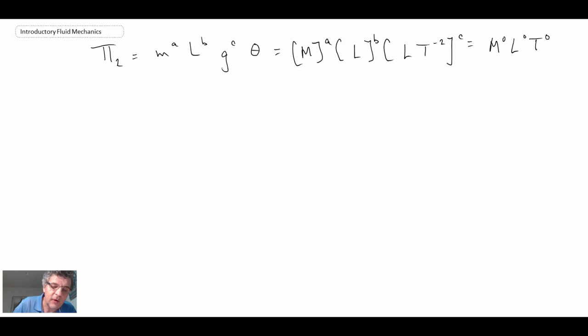Okay, so again let's go through our process. Beginning with the mass, we have A and that is equal to 0. Then looking at length, on the left hand side for length we have B plus C. And on the right hand side that's equal to 0. And then finally for time, on the left hand side, we have minus 2C. And that's balanced by 0 on the right. So what are we getting here?